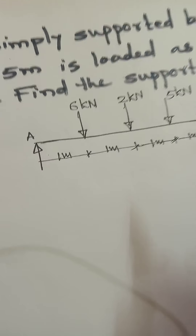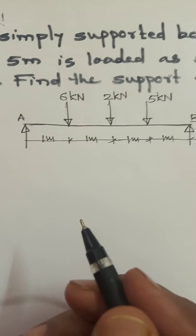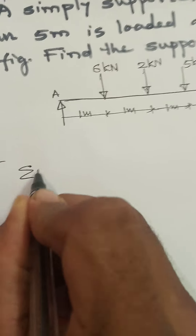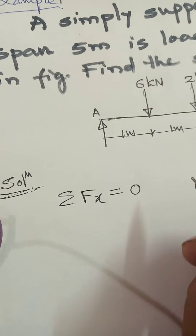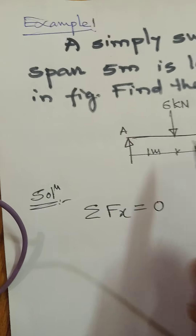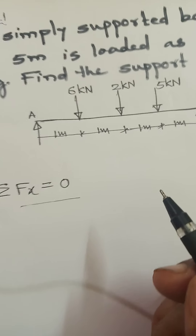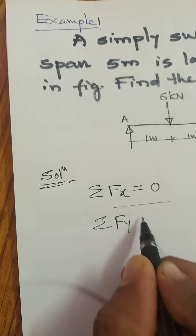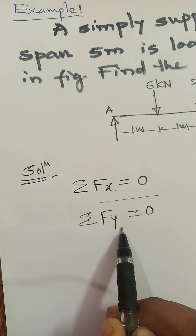To find the reactions, we apply the equations of static equilibrium. The first equation of static equilibrium is summation Fx equals zero. Since there are no horizontal forces, this equation is not applicable for this particular problem. We then go for summation Fy equals zero, which is the sum of forces in the y-direction.